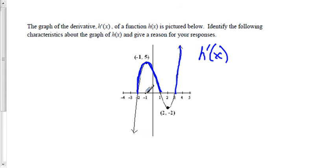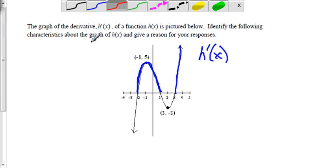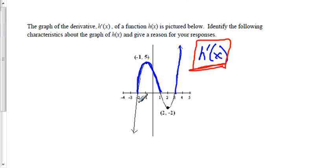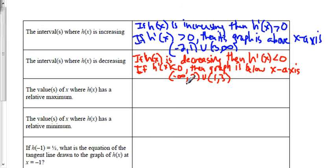On the graph, from -2 up to 1 (not including endpoints) and from 3 to infinity (not including 3) is where h(x) is increasing. h(x) is decreasing whenever h'(x) is negative — when the derivative graph is below the x-axis. That gives us the intervals from negative infinity to -2, union 1 to 3.